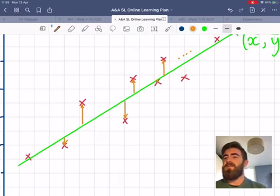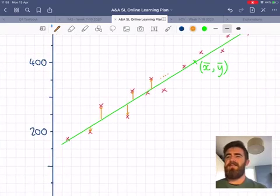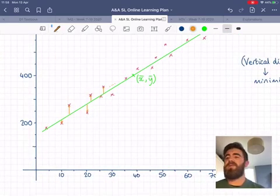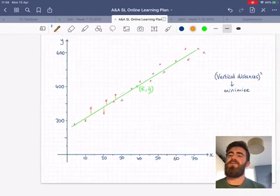And we'd eventually find a line that has the smallest sum of all those vertical distances squared. That will be the line that, in some ways, is closest to every point. Although, it's a bit more complicated than that.